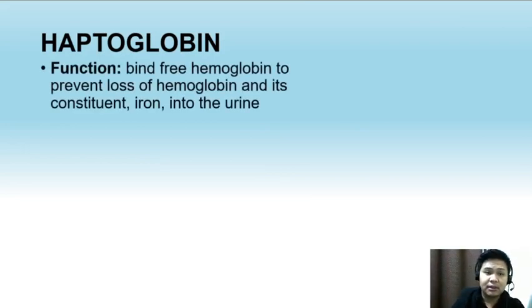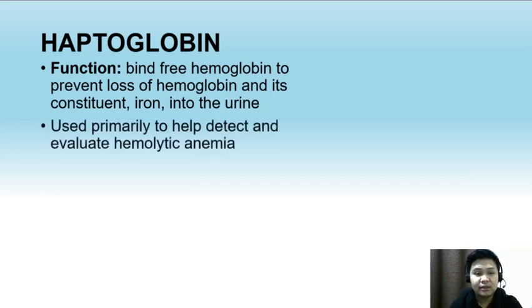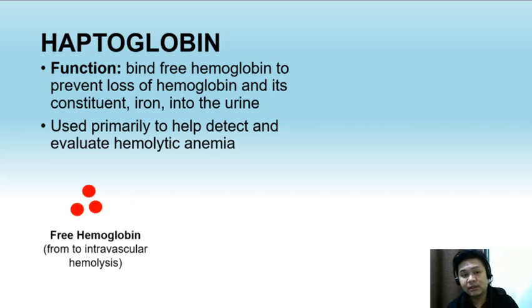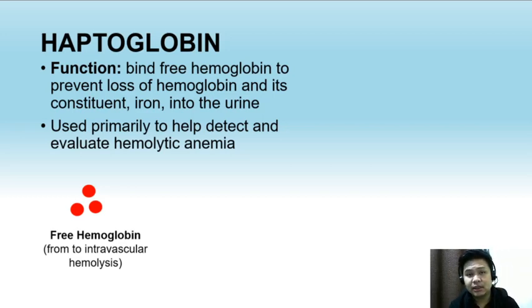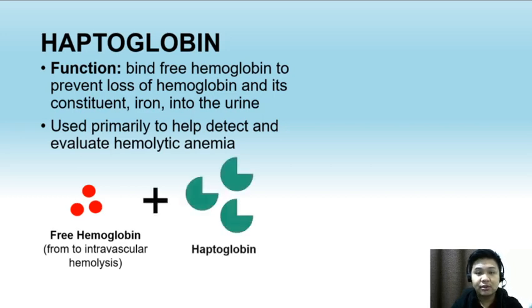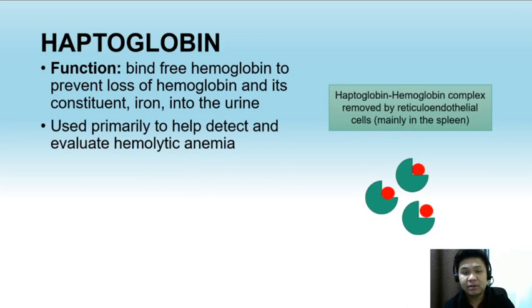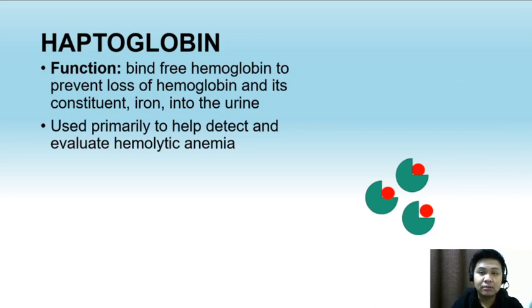The next protein is haptoglobin. Haptoglobin binds free hemoglobin to prevent the loss of hemoglobin and its constituent iron into the urine. It is used primarily to help detect and evaluate hemolytic anemia. In hemolytic conditions, hemoglobin normally found inside RBCs is released as free hemoglobin. Being a small protein, free hemoglobin can be excreted in the urine and cause nephrotoxicity. Haptoglobin prevents this by binding free hemoglobin; the haptoglobin-hemoglobin complex is then removed by reticuloendothelial cells mainly in the spleen. Therefore, haptoglobin levels are decreased in hemolytic anemia.